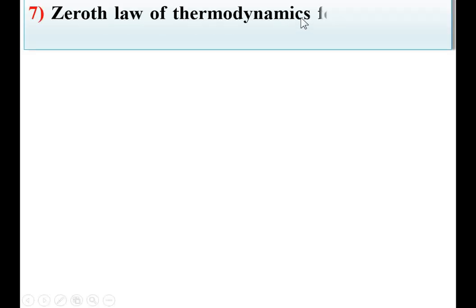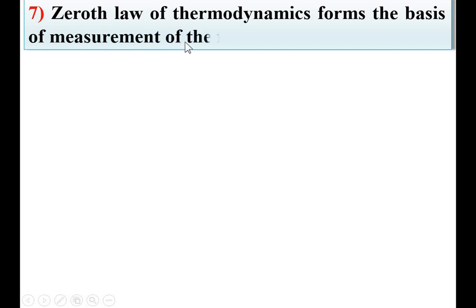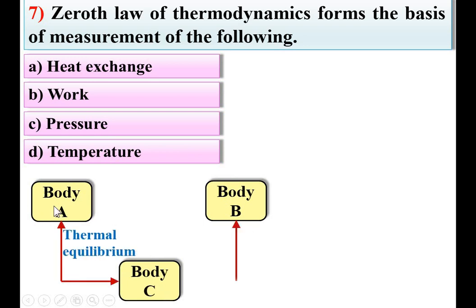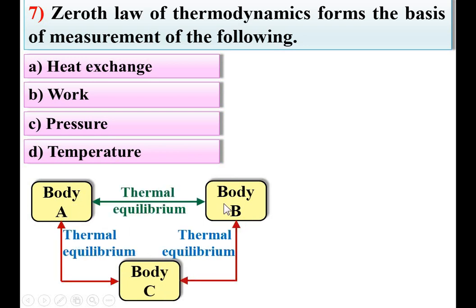Next: the zeroth law of thermodynamics forms the basis of measurement of — options: heat exchange, work, pressure, temperature. The zeroth law states that if two bodies A and B are in thermal equilibrium with body C, then A and B are also in thermal equilibrium with each other. Thermal equilibrium is related to temperature, so the zeroth law gives the basis for temperature measurement. D is the right answer.